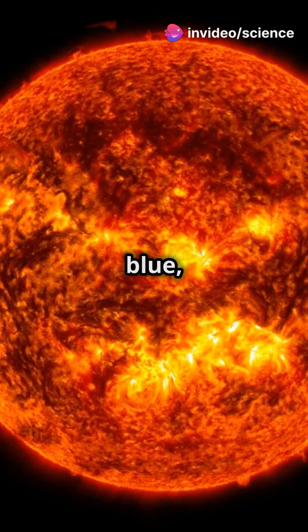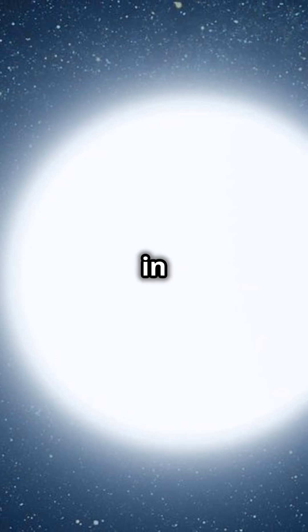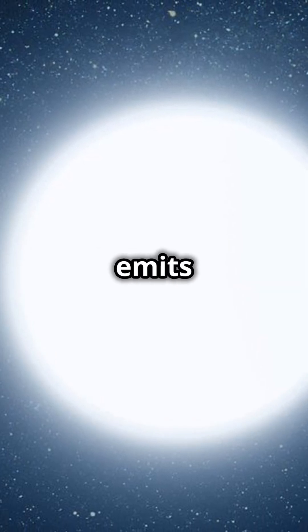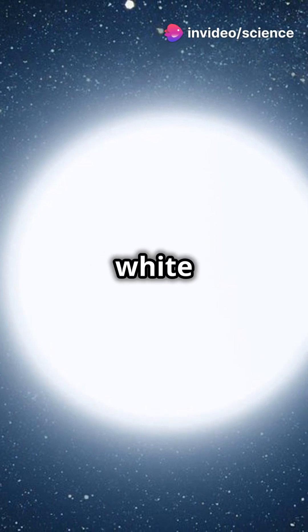Stars hotter than the sun look blue, while cooler stars appear red. The sun is in fact white. This is because it emits all the colors of the visible spectrum, which combine to appear white to our eyes.